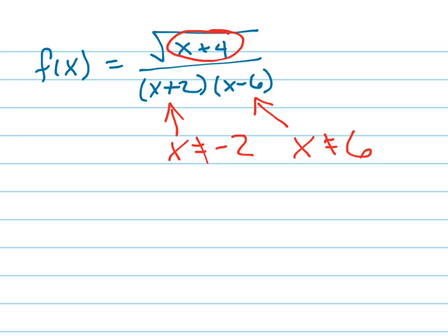Furthermore, this inside here has to be greater than or equal to 0 because I can't take the square root of a negative in the real number system. So this is saying what's the domain in the real number system. So that means that x has to be greater than or equal to negative 4.